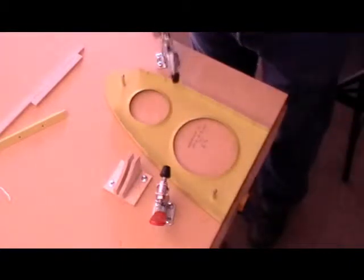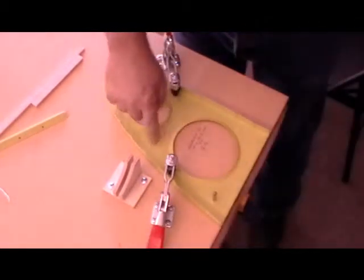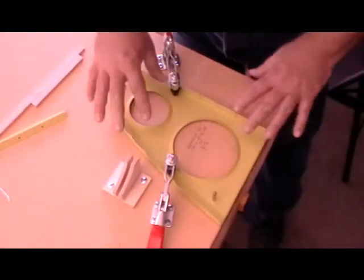So with these toggle clamps, all I have to do is just take a toggle clamp, push it down tight, take this one, push it down tight, and now this rib is flat, perfectly flat to the table.